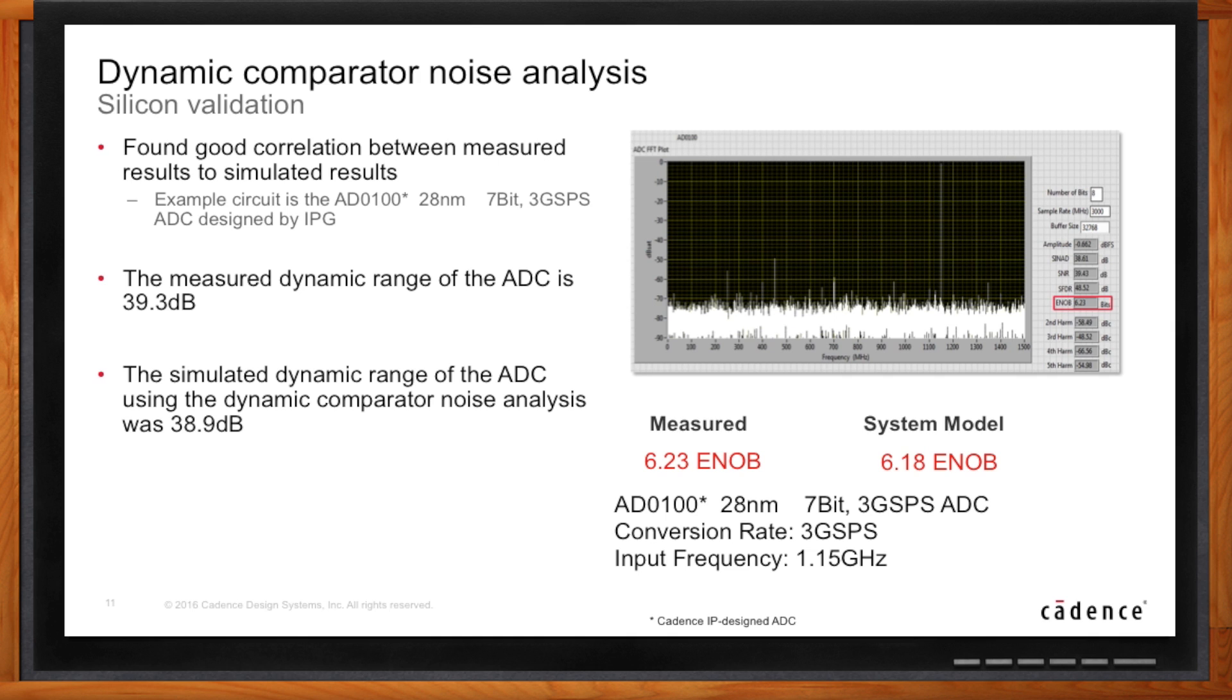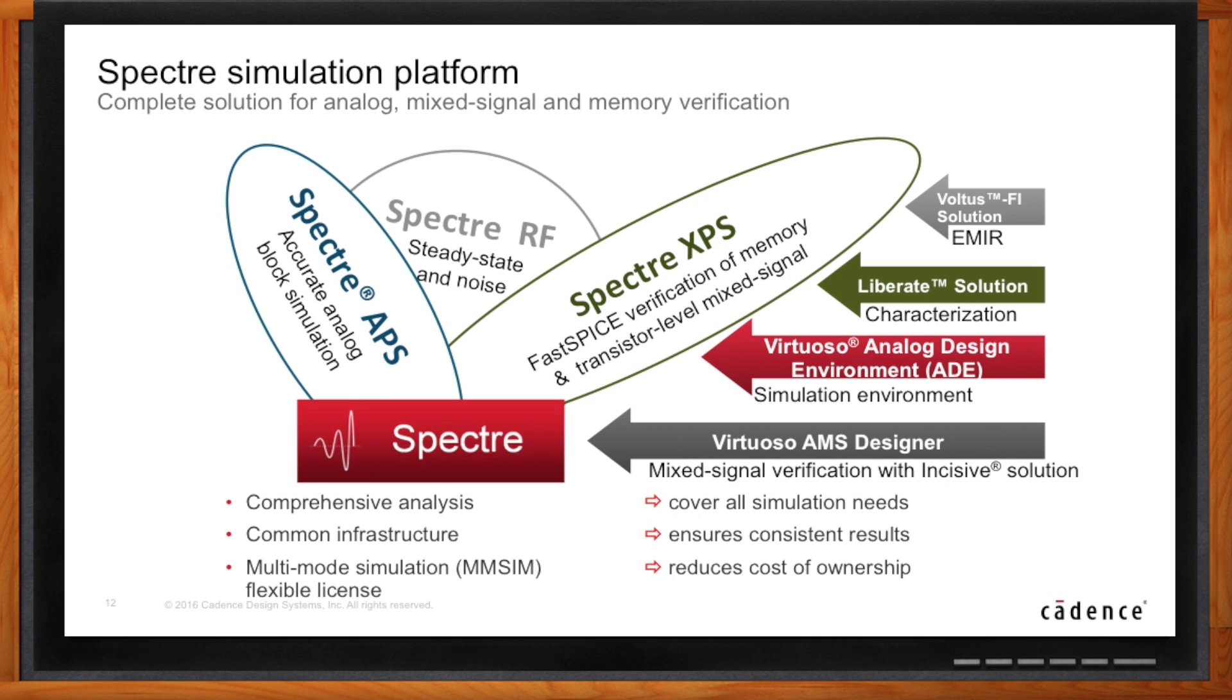And how does this fit into the big picture at Cadence? At Cadence, we have Spectre. That's our simulation platform. And inside of that, we have different technologies to solve different problems. For transient noise analysis, we have Spectre APS. It does transient SPICE simulations very quickly. We have Spectre RF to do that periodic noise analysis. And we have another technology we call Spectre XPS, and that's more for fast SPICE applications like memory.